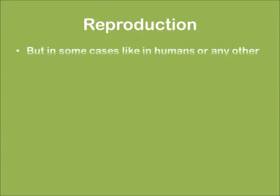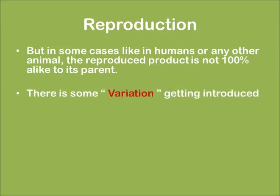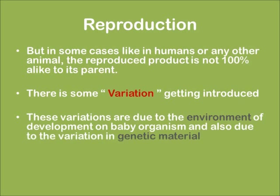But in some cases, like humans or any other animal, the reproduced product is not 100% alike to its parents. There is some variation getting introduced. These variations may be due to environmental development of the baby organism and also due to variation in the genetic material.